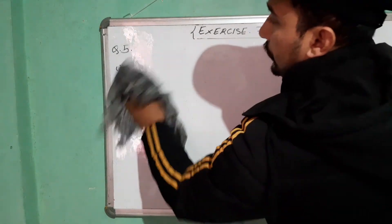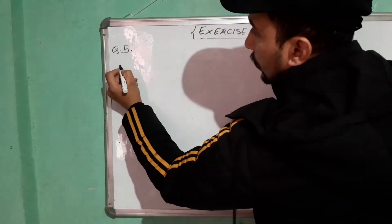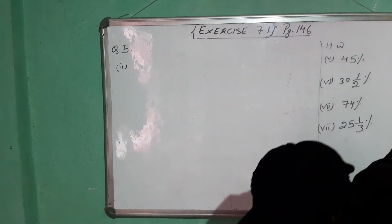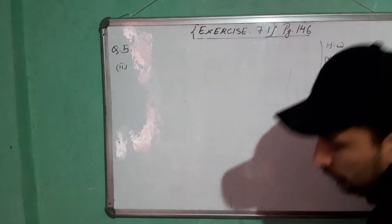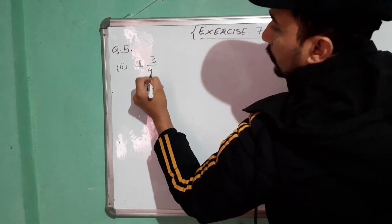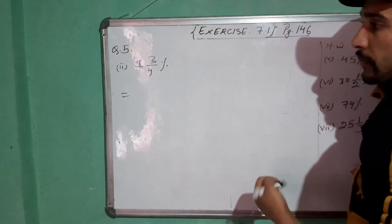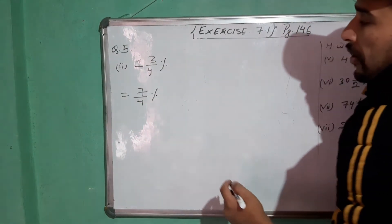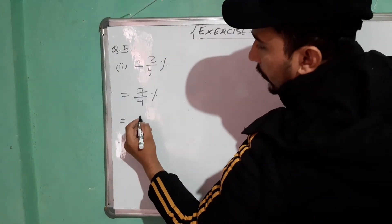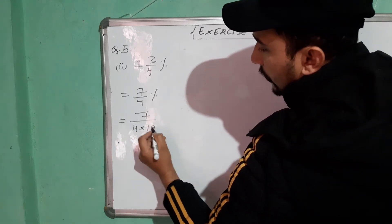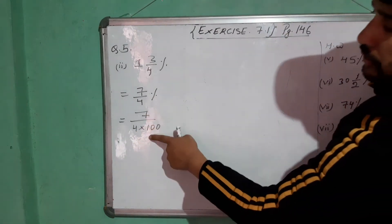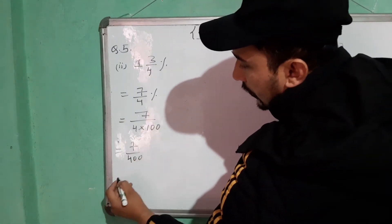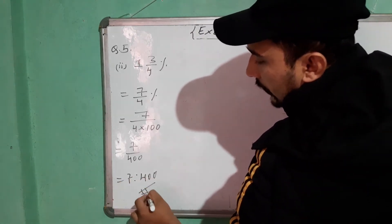Next question, number 5 part 2. You have 1¾%. Convert it into an improper fraction: 4×1 plus 3 is 7, so it becomes 7/4%. Now divide by 100 to remove the percentage: 7 divided by 4 into 100, which gives 7/400. You cannot cancel numerator and denominator as they have no common factors. So the answer is 7 is to 400.